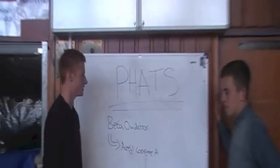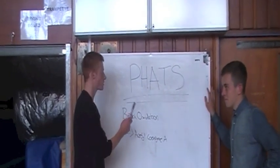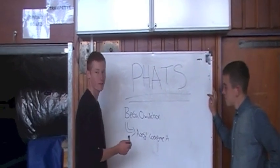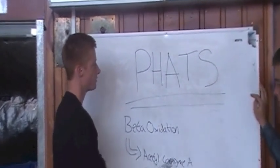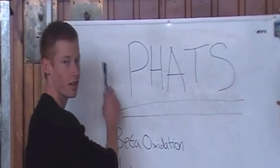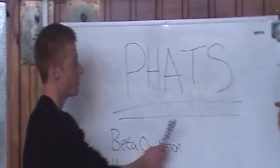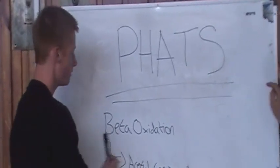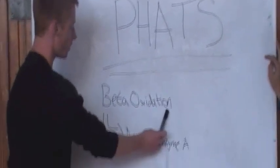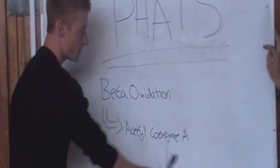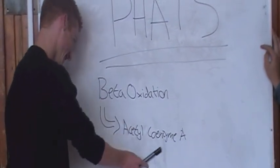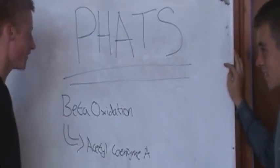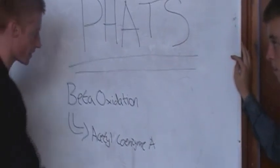Fats are also a key aspect in the aerobic system. As well as glucose and glycogen, fats feed into the Krebs cycle. Fats are converted by beta-oxidation into acetyl-coenzyme A, which then feeds straight back into the Krebs cycle to make more and more ATP.